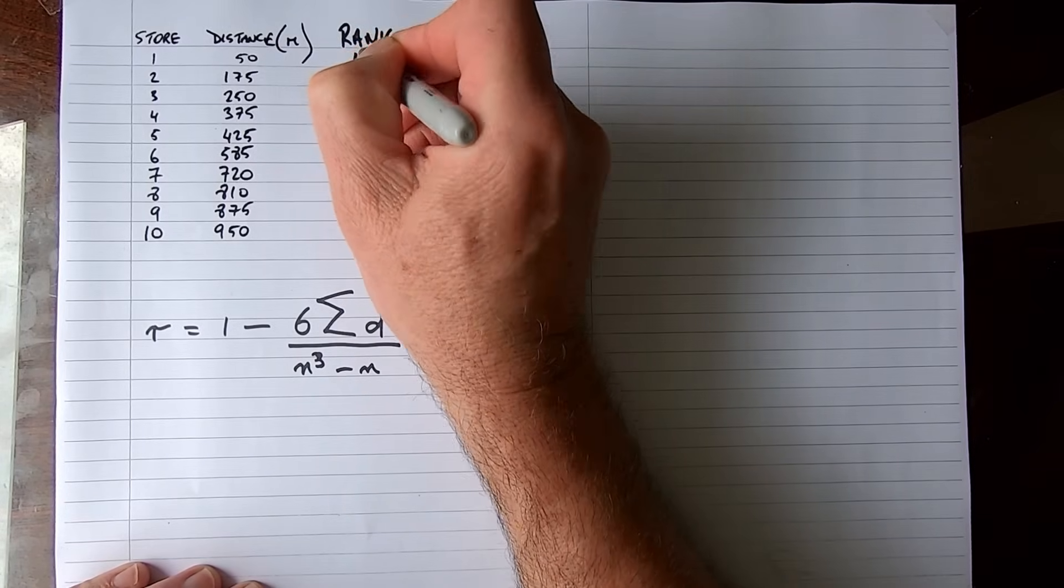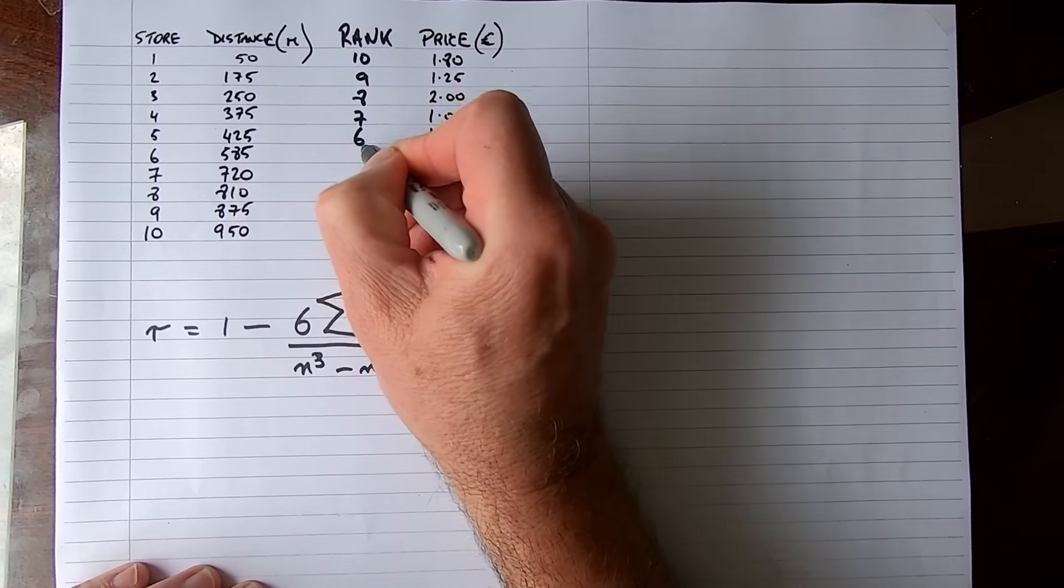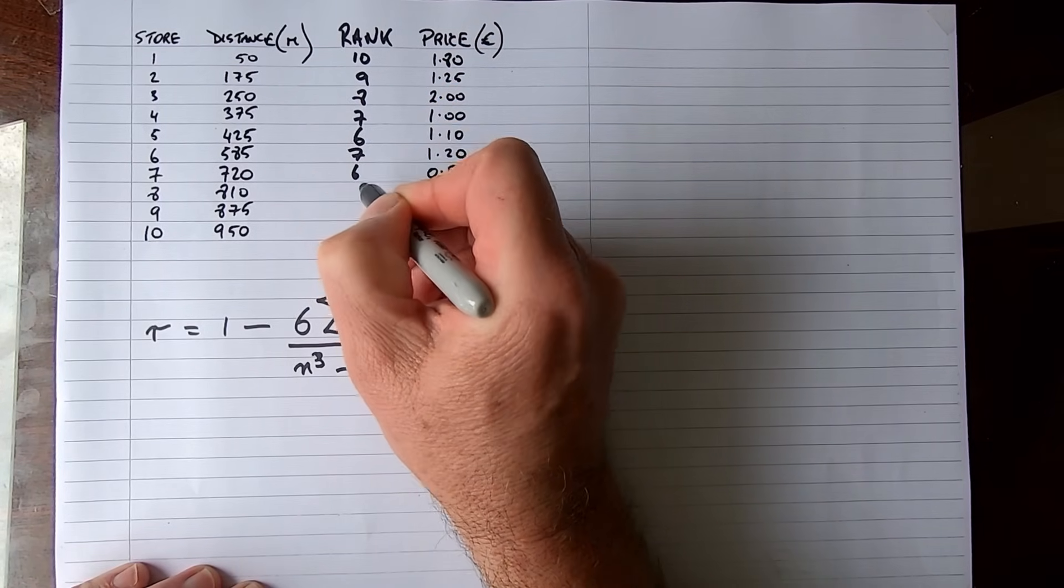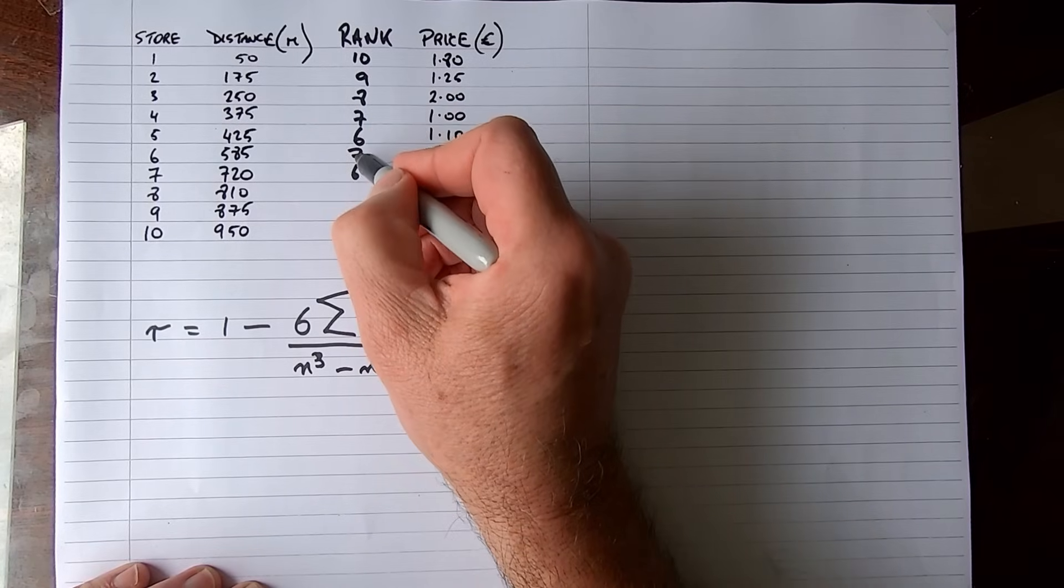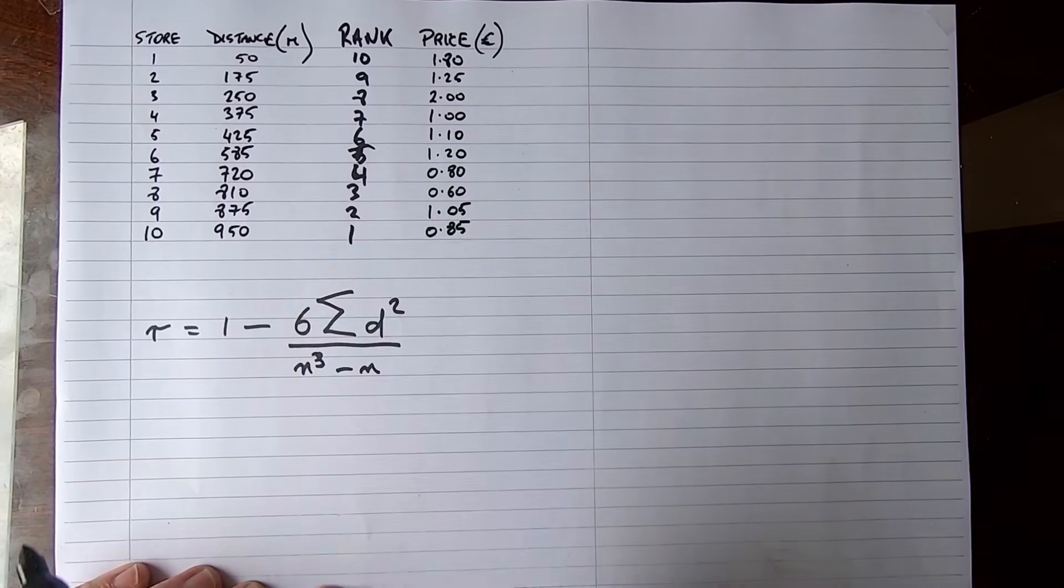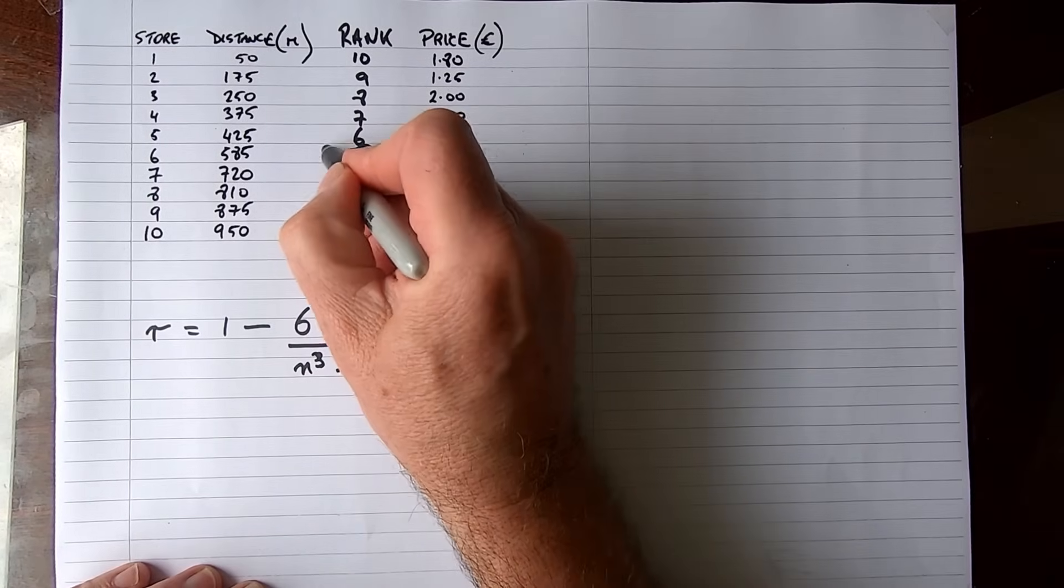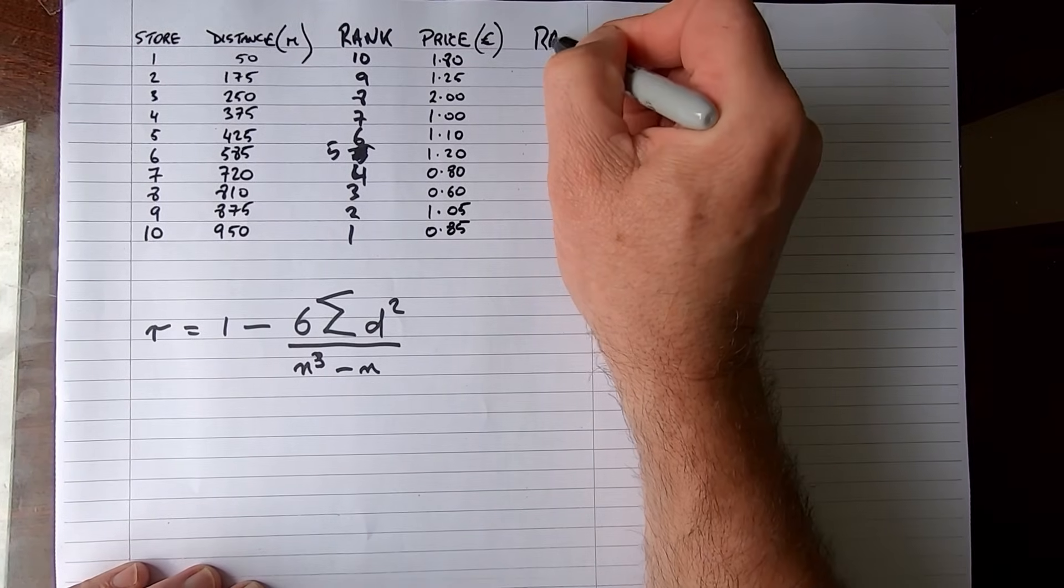We can see this is increasing from low to high, so my rank here for the first store is rank number 10, the second store is rank number 9, and so on. So this part of the data set is really easy to do: 10, 9, 8, 7, 6, 5, 4, 3, 2, and 1.